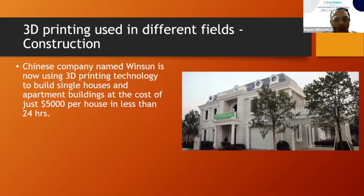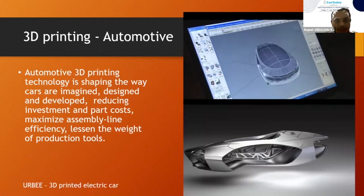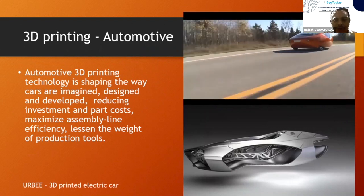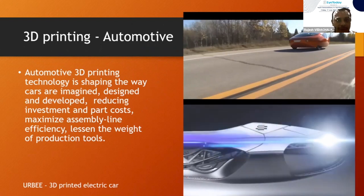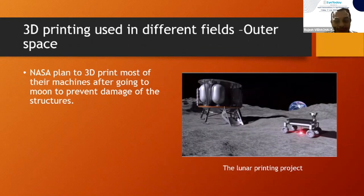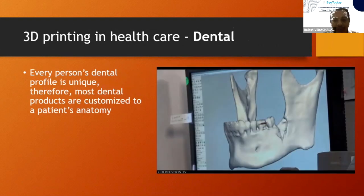In China, they have already started to 3D print houses in a single day costing only $5,000. In aviation, they have 3D printed the LEAP engine, a very lightweight engine that has conserved a lot of fuel. In automobile industries, they have 3D printed a car called URBEE, the first 3D printed car, and nowadays almost all cars have some 3D printed parts. In the food industry in the US, they have started to 3D print food and cookies. Even NASA wants to take filament up and 3D print delicate structures in space. In dentistry, most crowns are 3D printed for root canal treatment.